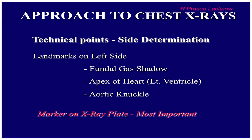Landmarks on the left side include: the fundal gas shadow, the apex of the heart, and the aortic knuckle. Using these three landmarks you can recognize left and right sides of the chest X-ray. However, these landmarks may not always be visible. In that scenario, the sacrosanct marker put by the technician while taking the X-ray is used — so in cases of difficulty, look at the marker to determine left or right.